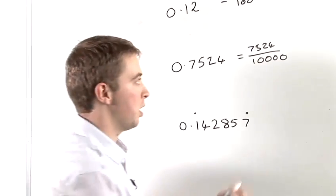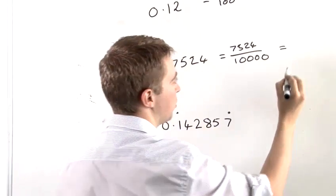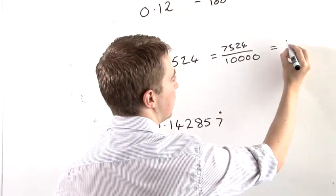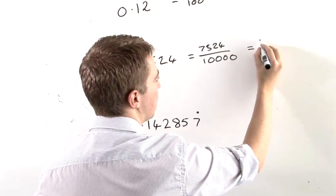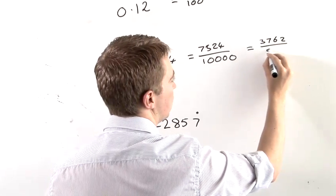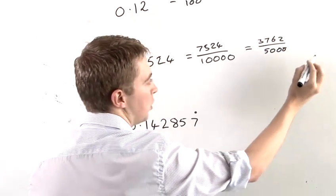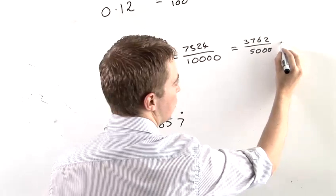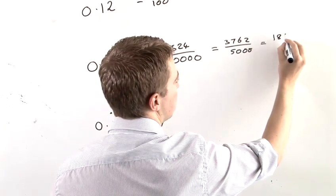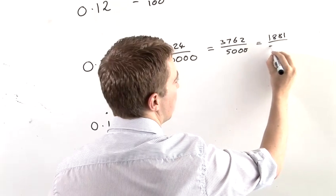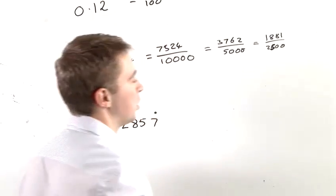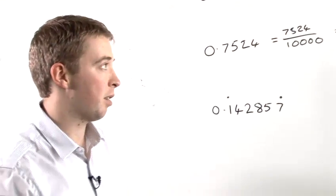And so again, we can simplify that. This might take me a while. So we've got to divide top and bottom by two first to give us 3762 over 5,000, which is equal to 1881 over 2,500. And so that is that fraction simplified.